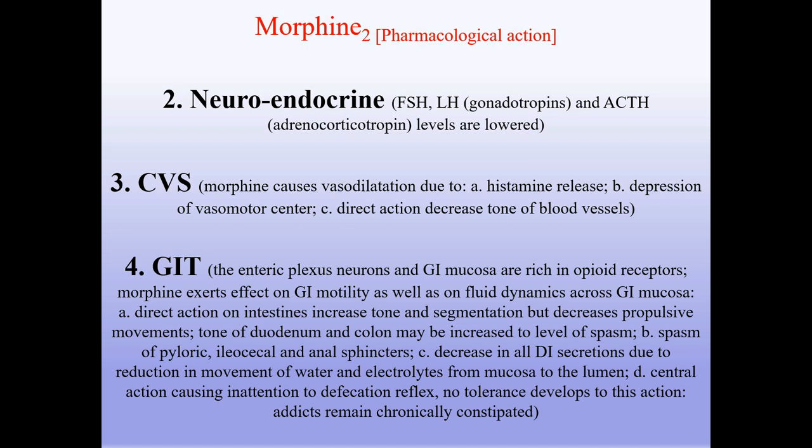Neuroendocrine effects: gonadotropin and adrenocorticotropin levels are lowered. Cardiovascular system: morphine causes vasodilation due to histamine release, depression of the vasomotor center, and direct action decreasing the tone of blood vessels.